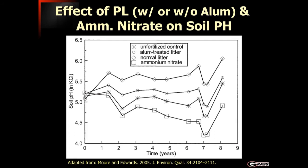The bottom line in the study shows where they applied only ammonium nitrate, which has an acidifying effect on the soil, and you can see that over time it has acidified the soil a little bit. The unfertilized control hovered around 5.0 to 5.3. The alum-treated litter did improve soil pH a little, but not as much as the non-treated poultry litter.